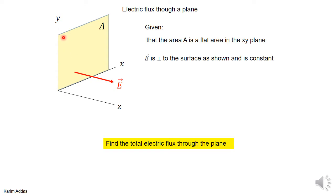Let's imagine you have a plane with area A existing in the xy-plane, so the z-axis is perpendicular to this plane. It's given in the problem that the electric field is uniform — the same value everywhere in space. The question asks: what is the total electric flux through this plane?